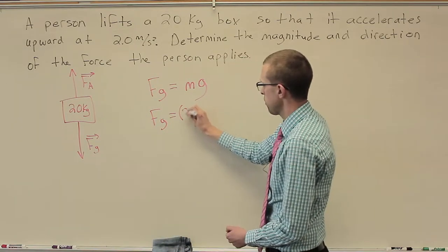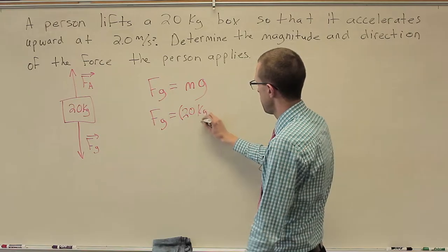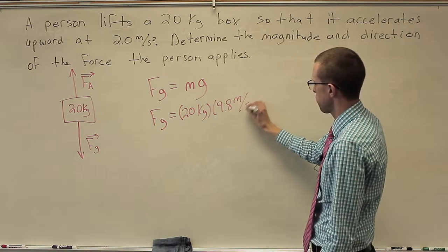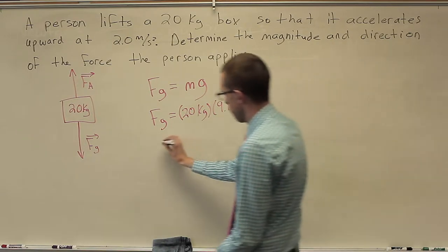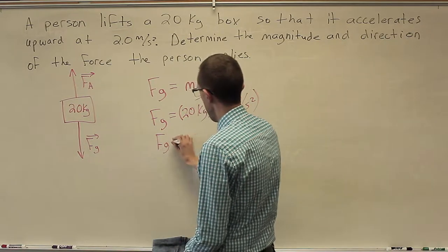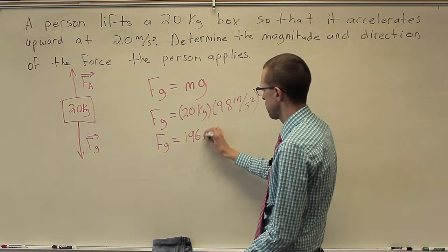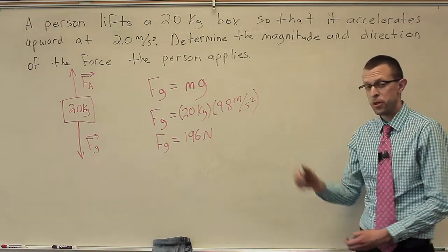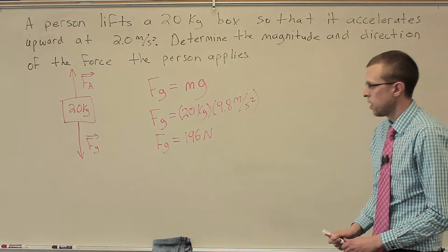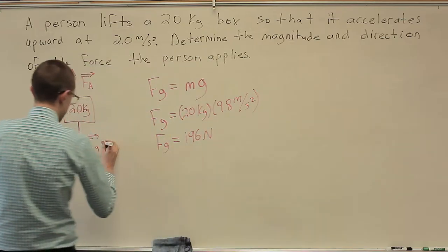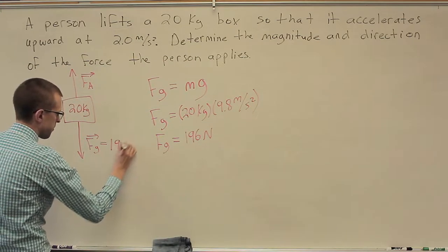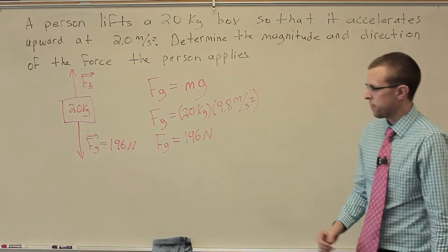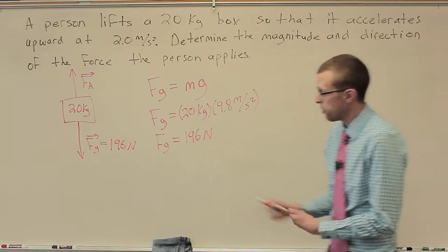So the force of gravity, F subscript G, is equal to the mass of the object times the acceleration due to gravity at Earth's surface. So in this case, F G is going to be equal to 20 kilograms times 9.8 meters per second squared. And so that's just going to be a force of gravity of 196 newtons. 20 times 9.8 is 196 kilograms times meters per second squared. That's the same as newtons. So I'll add that to my diagram.